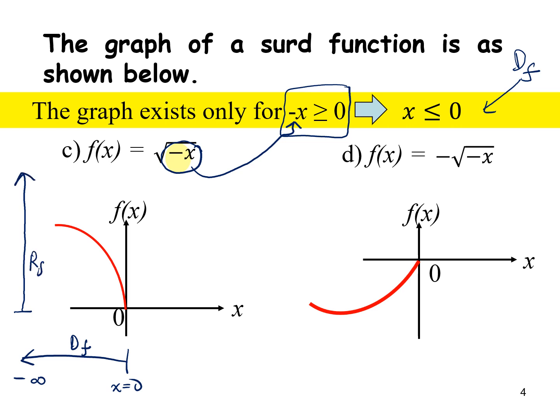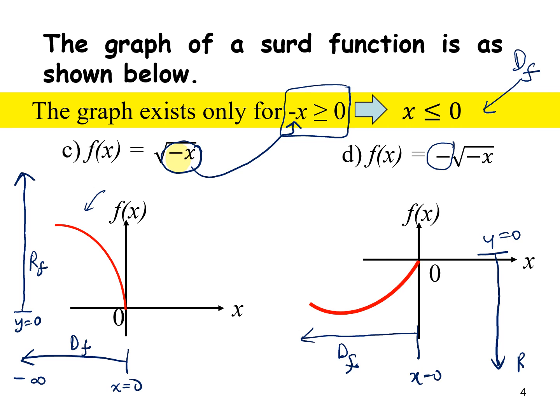For f(x) = -√(-x), the domain is still x ≤ 0, but the negative means the graph is reflected at the x-axis, so the shape goes downward from this graph. The domain starts at 0 going to negative infinity, and the range goes from y = 0 to negative infinity.